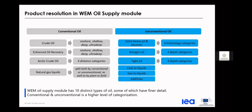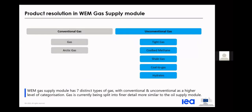Diving deeper into the fossil fuel supply module: in the WEM oil supply module there are 10 distinct types of oil, some with finer detail than others. In the crude and enhanced oil recovery sections, we detail further onshore, shallow, deep, and ultra-deep categories. Other categories — Arctic, extra heavy oil and bitumen, carriage, and tight oil — all have varying distance, technology, or depth categories. Coal-to-liquids, gas-to-liquids, and additives are assessed as well if sufficient price warrants. The oil module is more flexible than the electricity module but has quite a similar structure.